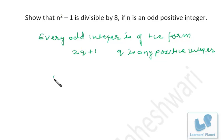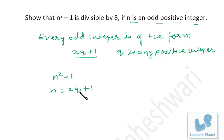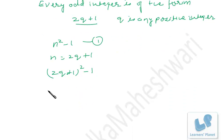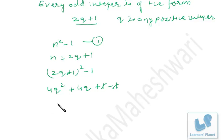Let's see n² - 1 where n is an odd positive integer. I put the value of n as 2q + 1. So (2q + 1)² - 1 gives us 4q² + 4q + 1 - 1, which simplifies to 4q² + 4q. Taking 4q common, we get 4q(q + 1).